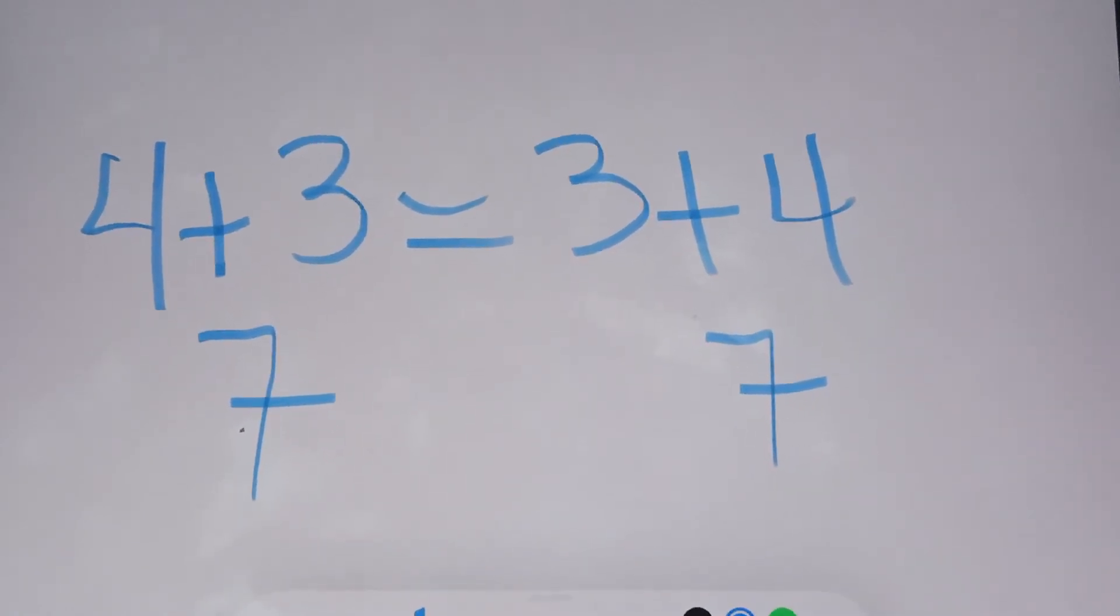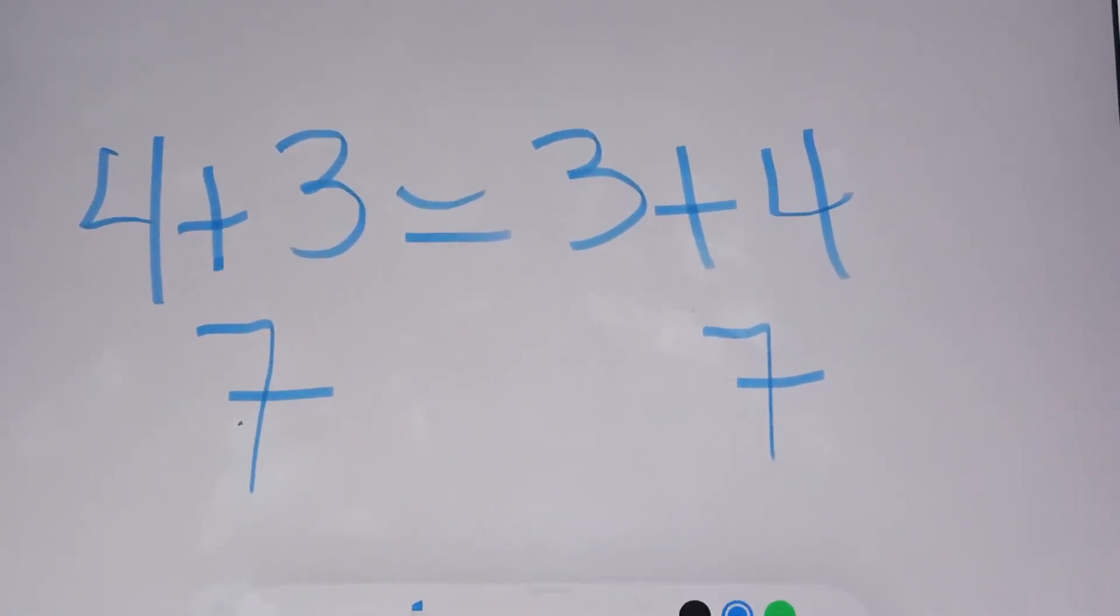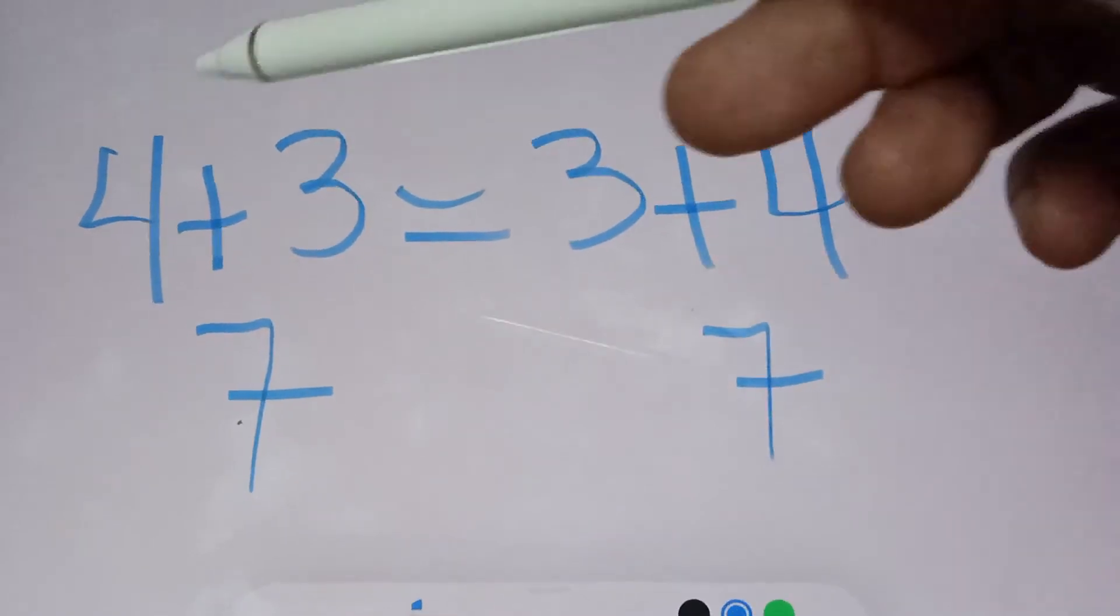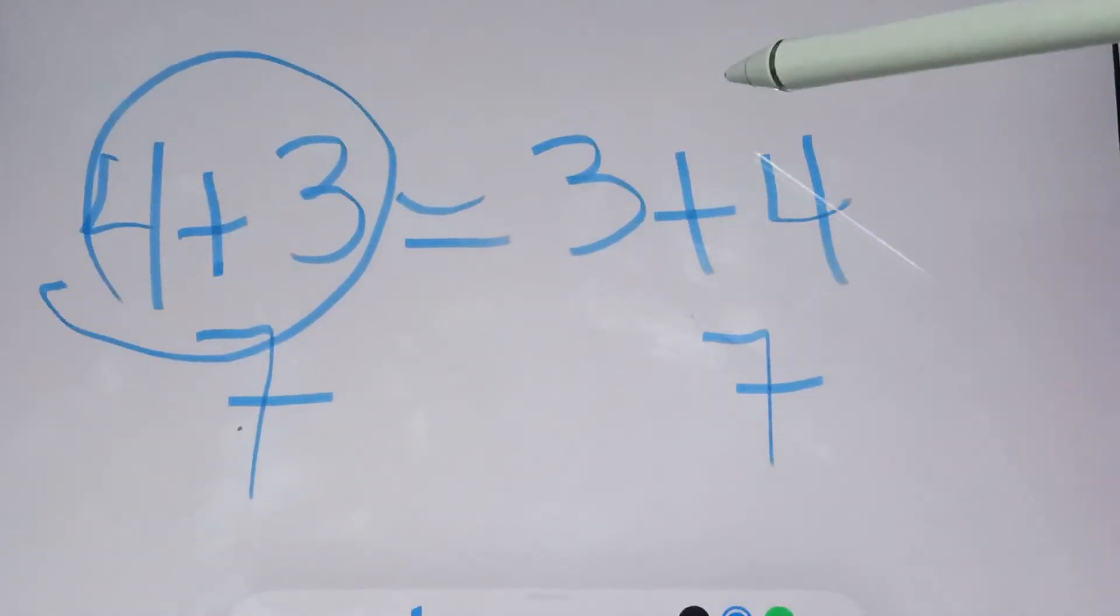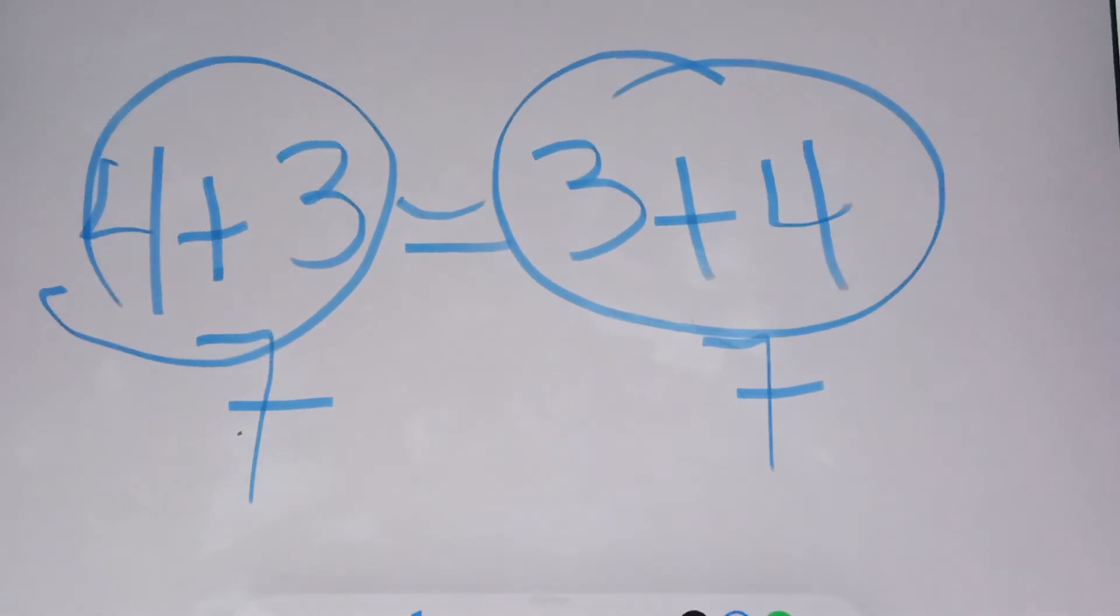So, that's how commutative property works. If you write them in this way or if you write in this way, the answer is always the same.